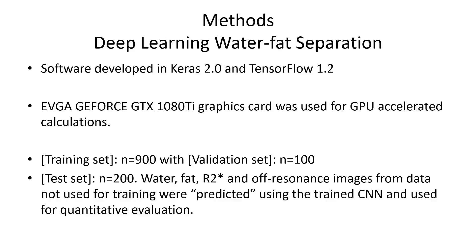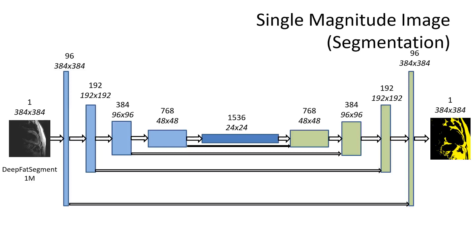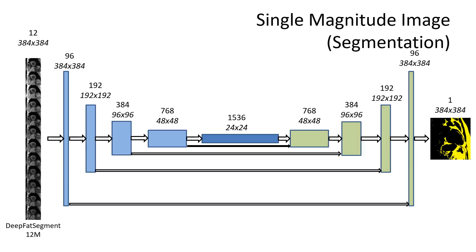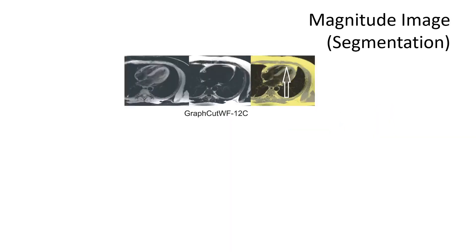Available data was split into training, validation, and testing sets. To provide insights into interpretability, we first trained the U-Net CNN to segment fat from a single magnitude image, then trained it to segment fat from 12 magnitude images. A representative example of ground truth training data obtained using the graph cut method is displayed here.